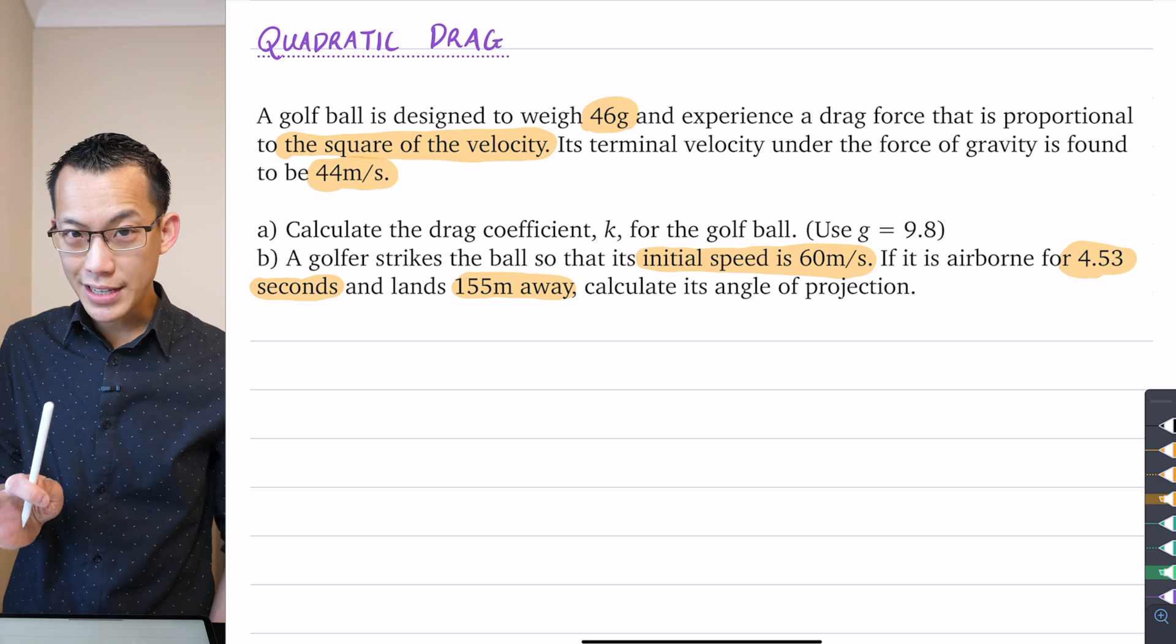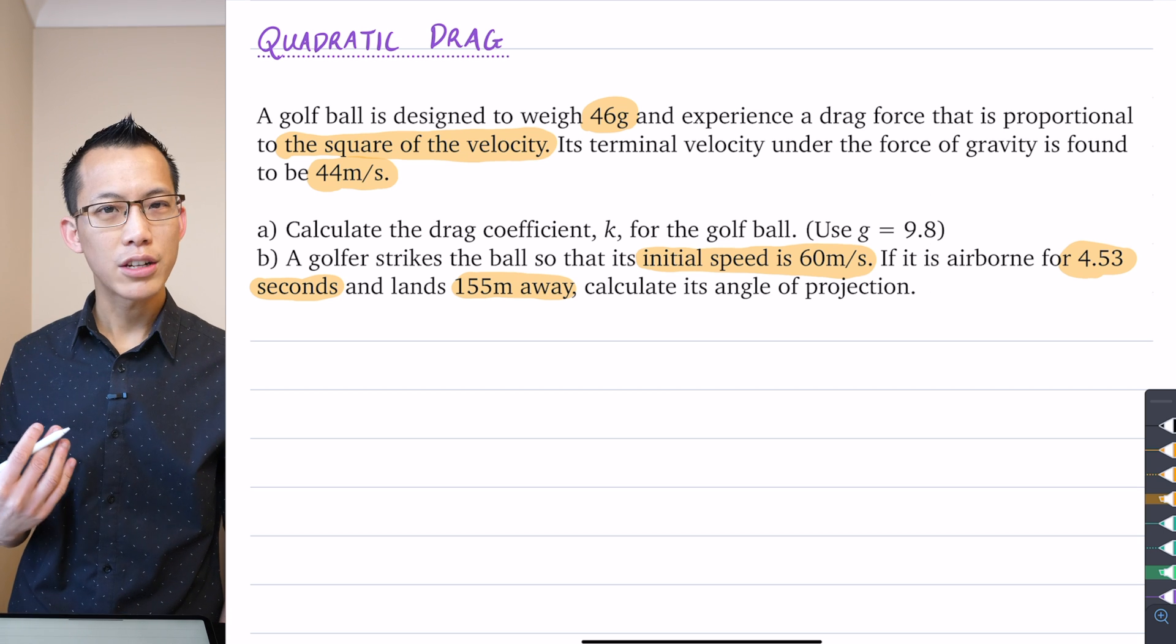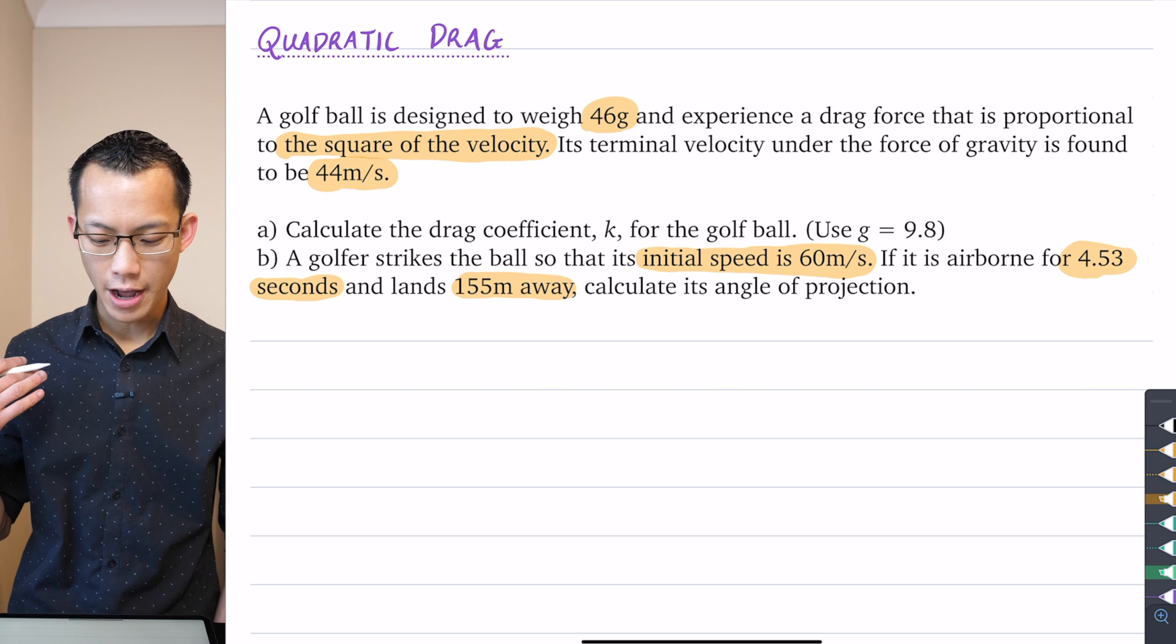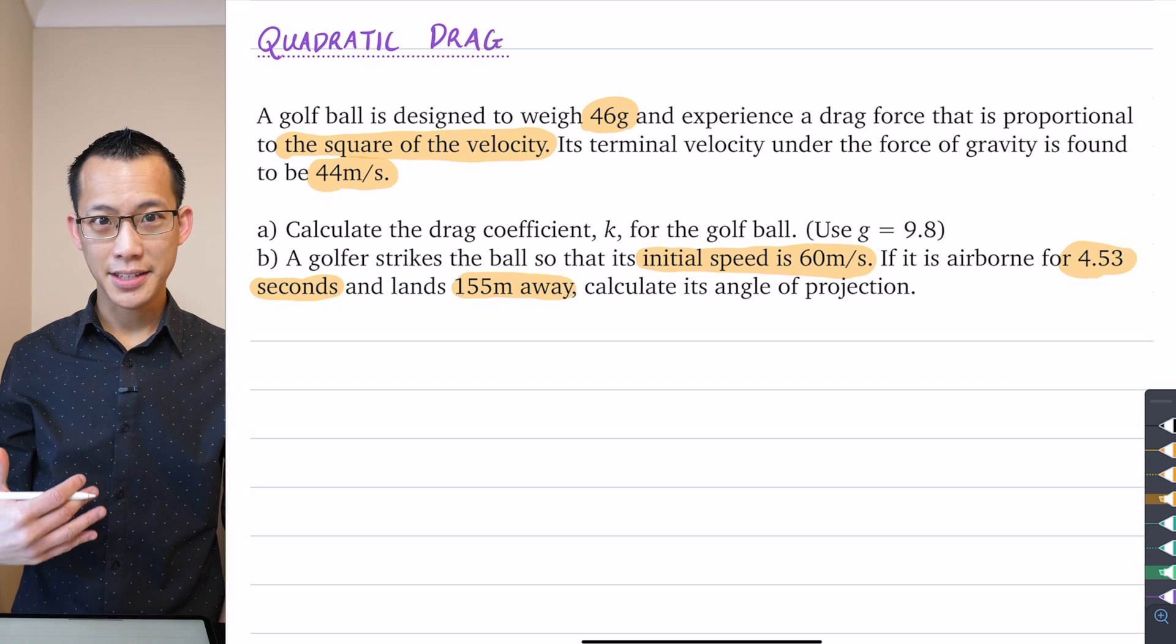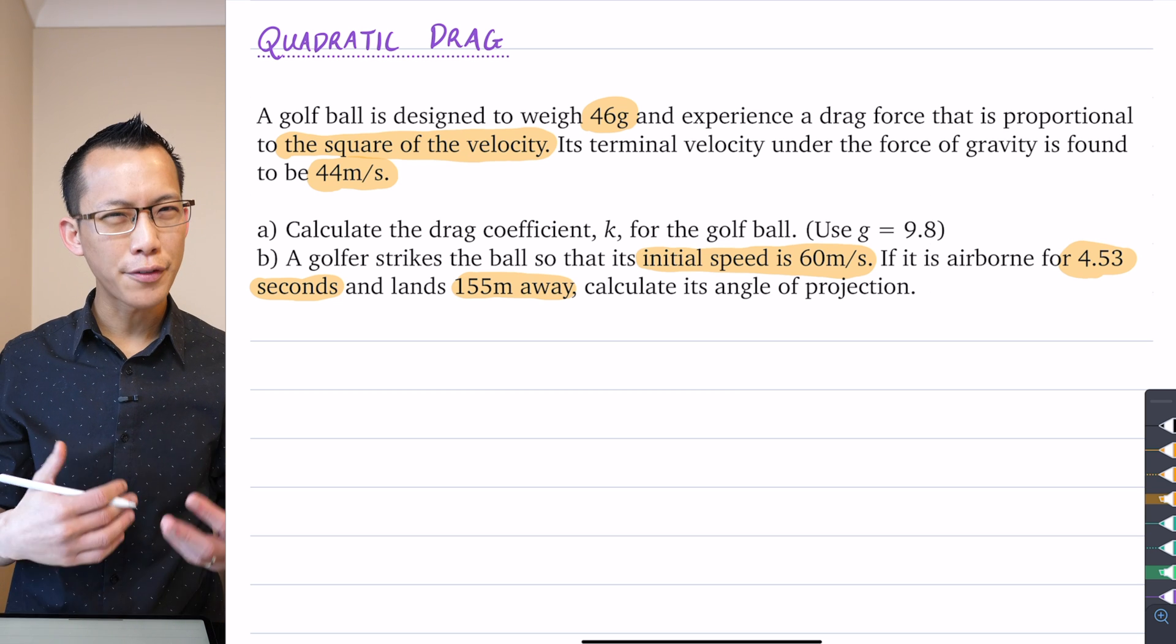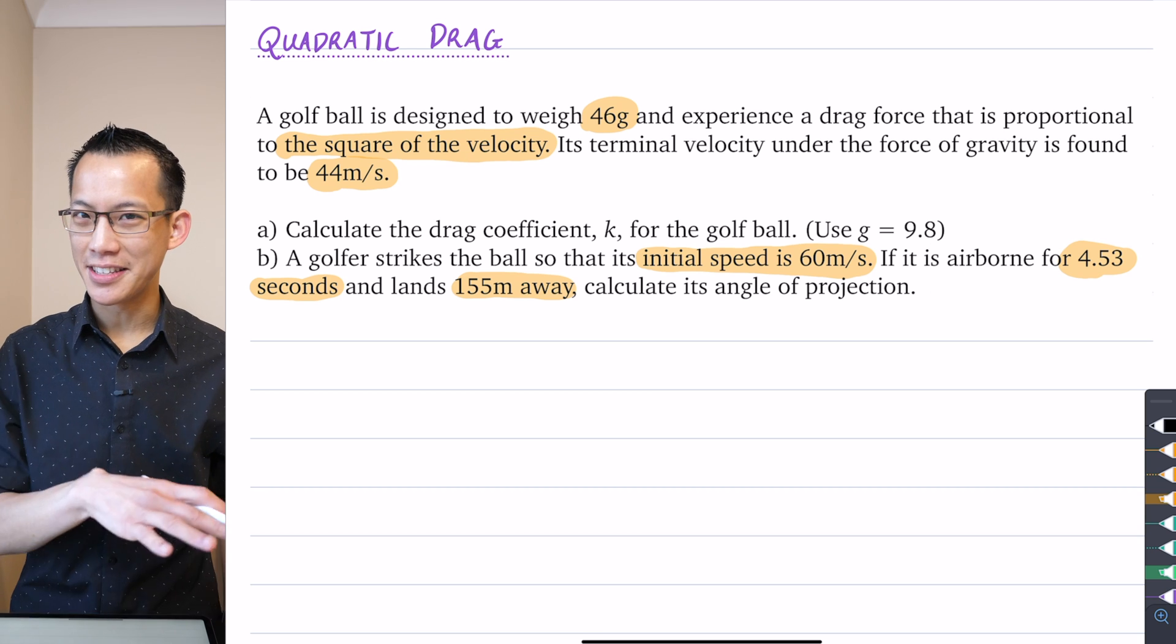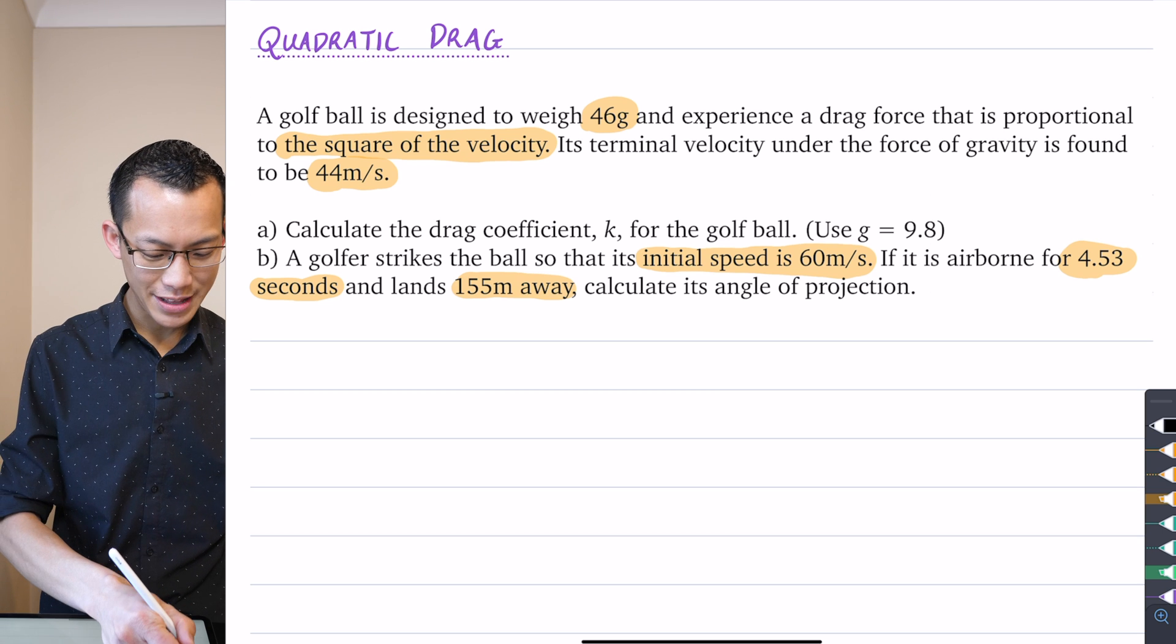If it is airborne for 4.53 seconds and lands 155 meters away, calculate its angle of projection. Notice this question is like Tuesday's question but completely backwards. We knew the angle of projection and had to find where we land, how long we're in the air. Now we're given the opposite information and asked to calculate things which used to be our starting point. Same knowledge, but all these differences.